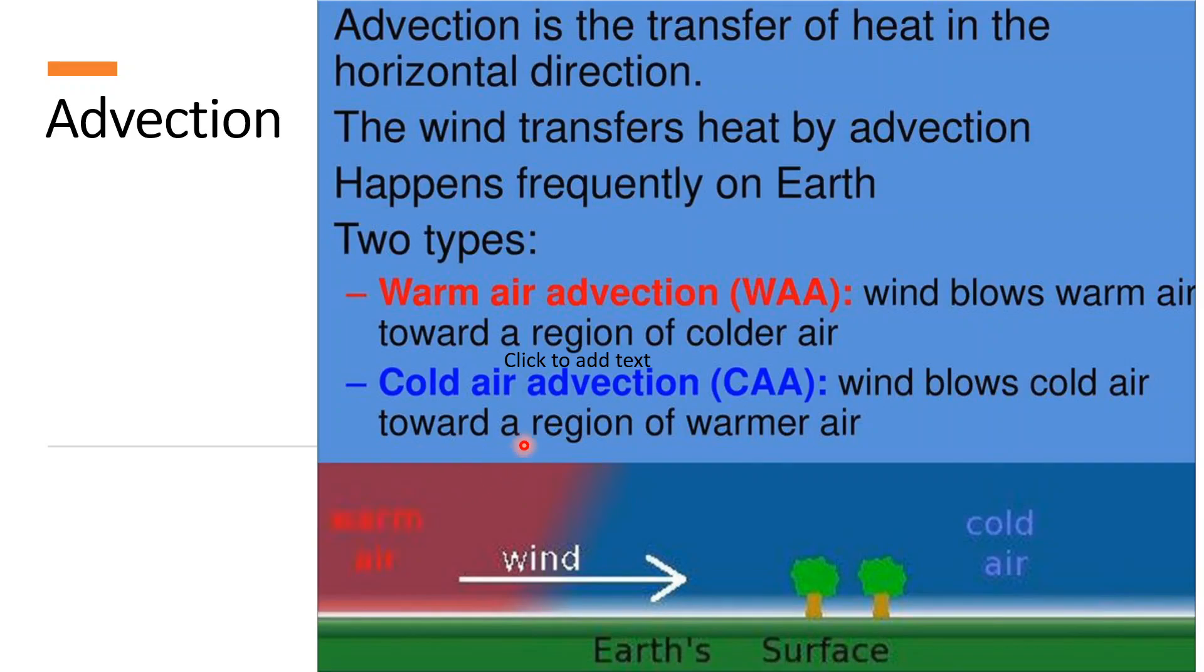The fourth one is advection. Now what is advection? It is the transfer of heat in a horizontal direction. So, this leads to the movement of air or wind from a warmer area to a colder area and thereby increasing the temperature.